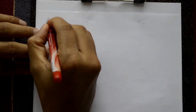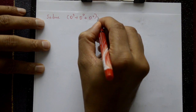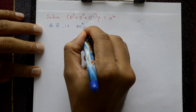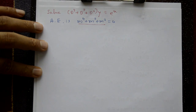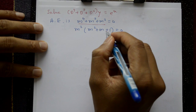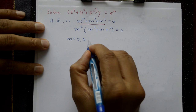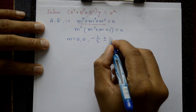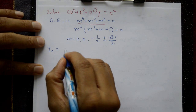Next example: (D⁴ + D³ + D²)y = e^x. The auxiliary equation is m⁴ + m³ + m² = 0. Factoring out m²: m²(m² + m + 1) = 0. This gives m = 0, 0 (repeated), and from the quadratic m = -1/2 ± (√3/2)i.